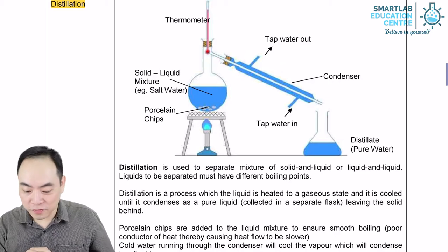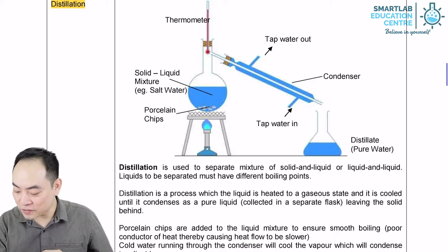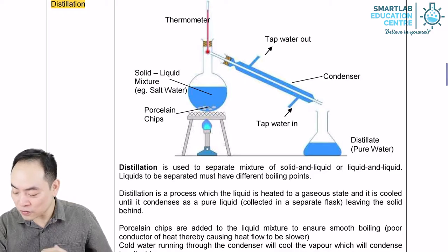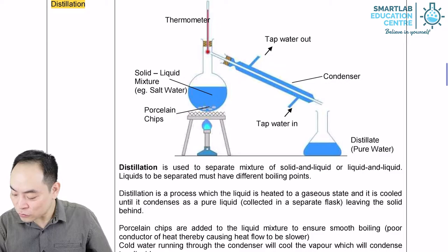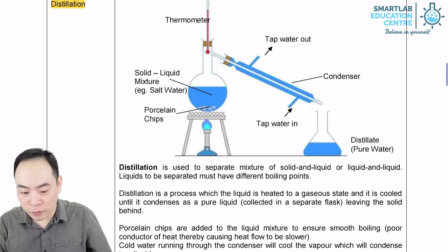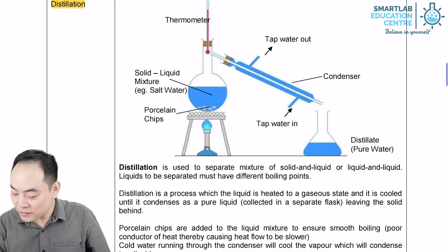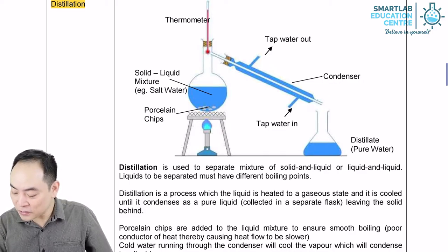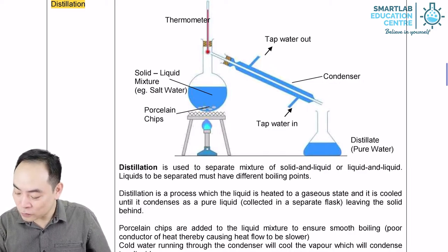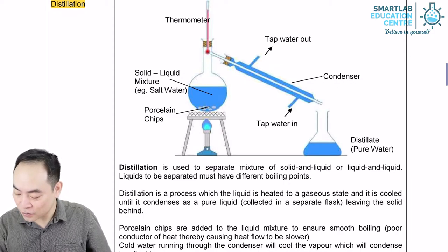In the last video on evaporation technique, we learned that the technique will leave us only with the salt from a salt solution. Now if we want to obtain water from a salt solution, how can we achieve this? This is done through distillation. Distillation is a method used to separate a liquid from a mixture of solid and liquid.